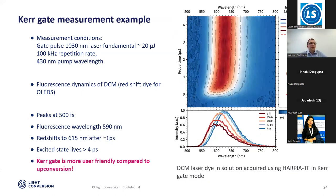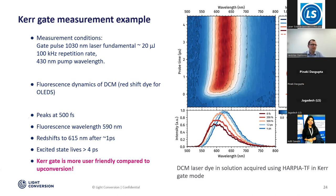Now the same dye measured with Kerr gating. Conditions are the same, everything is the same, but the time resolution is a little bit lower. We don't see as expressed a redshift as in the fluorescence upconversion method, though you can still indicate it. We measured the instrument response function — it's about 400 to 500 femtoseconds. So this is a little bit easier way of doing time-resolved fluorescence.